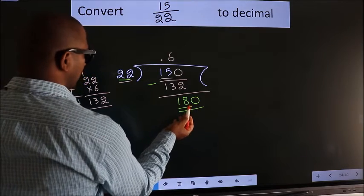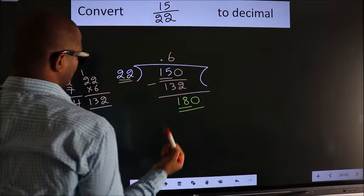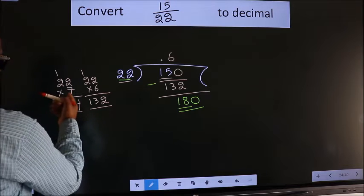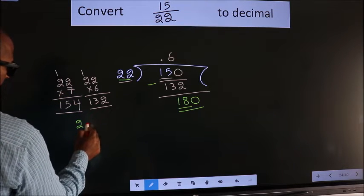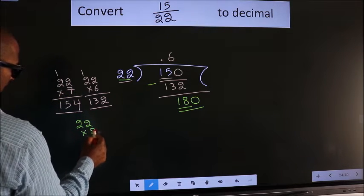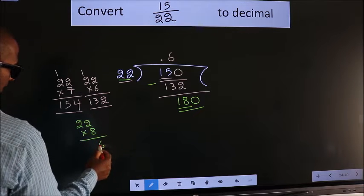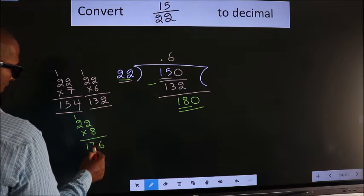A number close to 180 in 22 table is, let us go with 8. Let us go with 8 times 8. 8 twos 16. 8 twos 16 plus 1, 17.